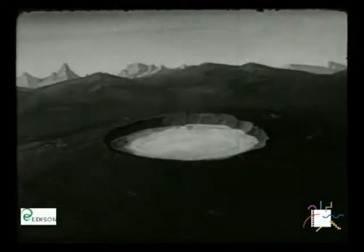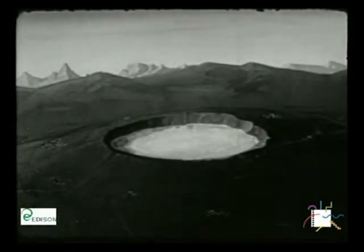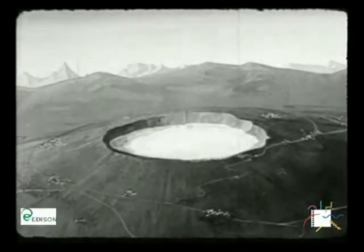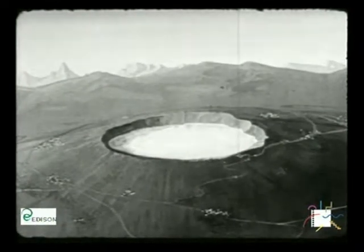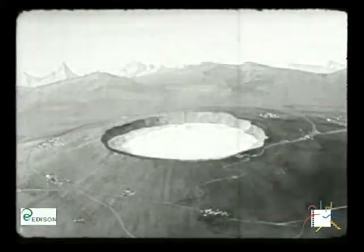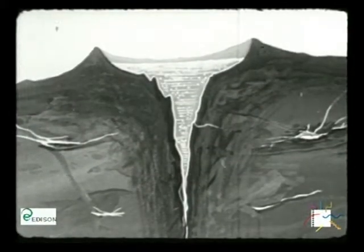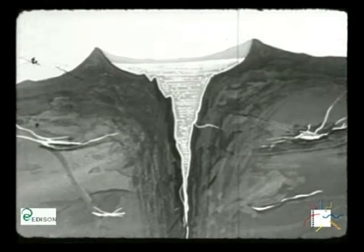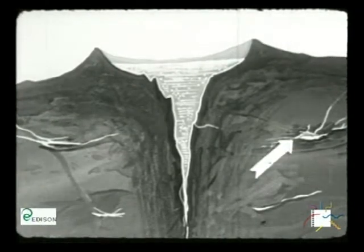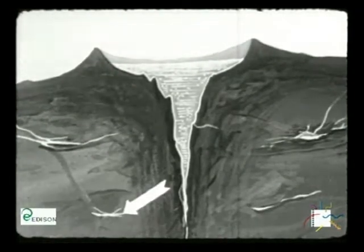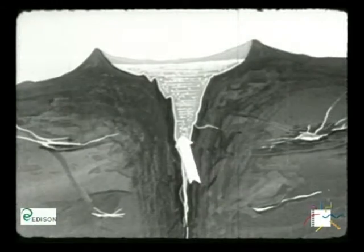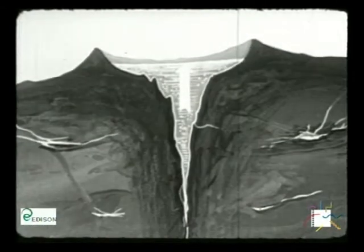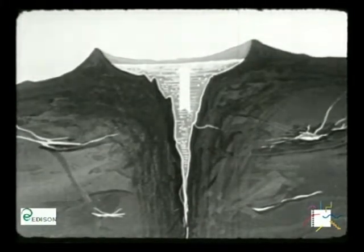Facilmente riconoscibili per la loro forma circolare, i bacini di origine vulcanica sono un esempio caratteristico di lago cieco. Questi laghi possiedono una notevole profondità che facilita il contatto con le sorgenti sotterranee presenti nella zona vulcanica. Quasi sempre sono sorgenti termali, cioè calde, e contenenti gran quantità di sali minerali disciolti.